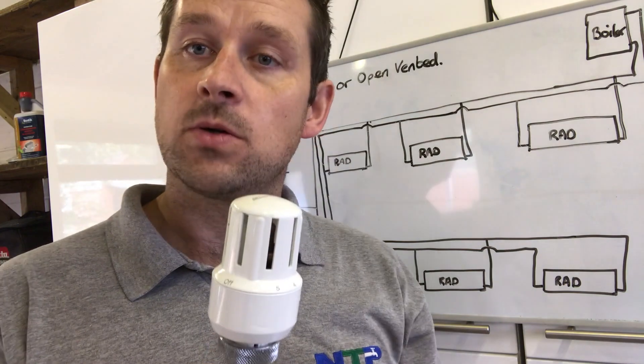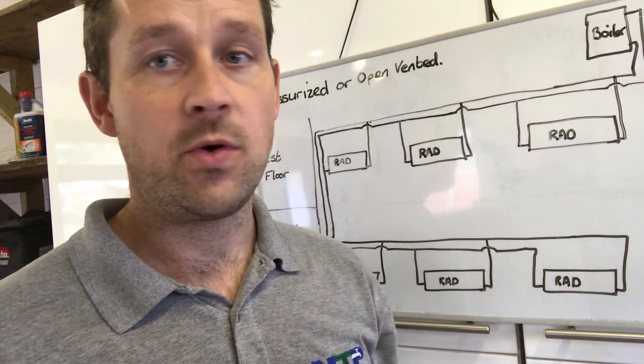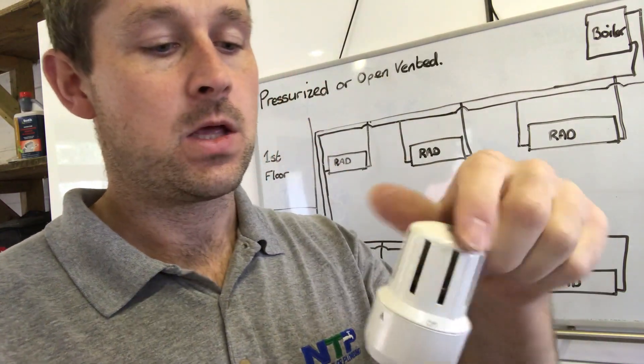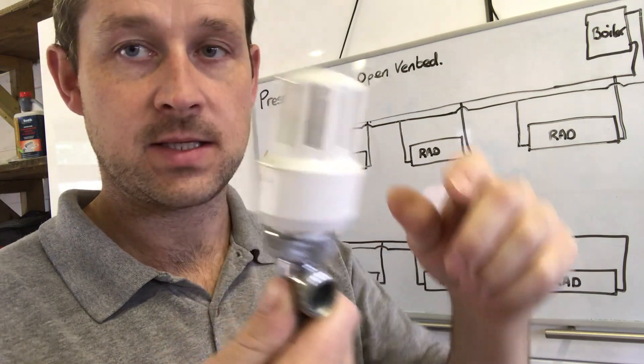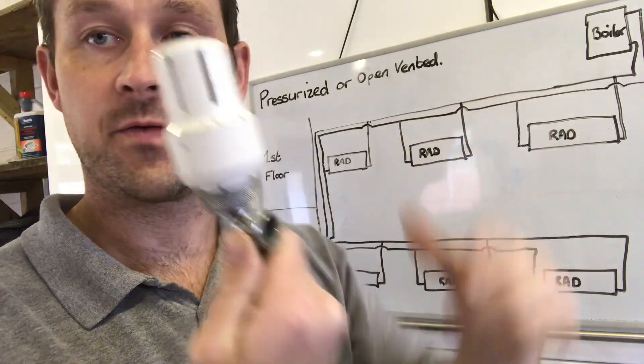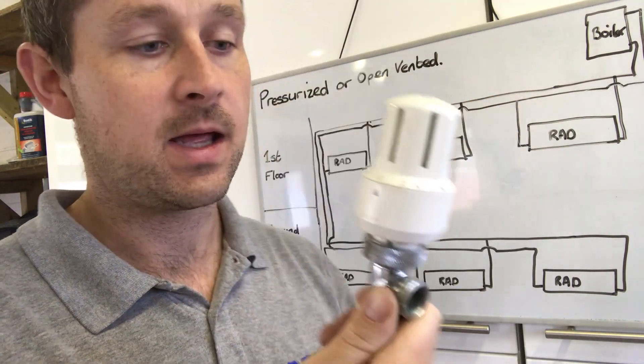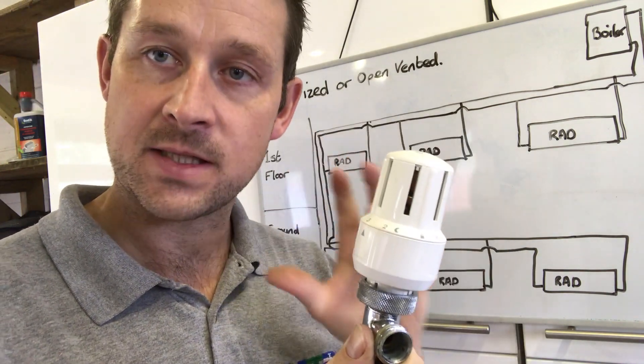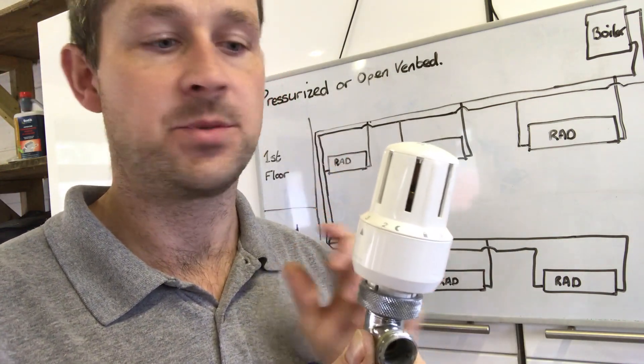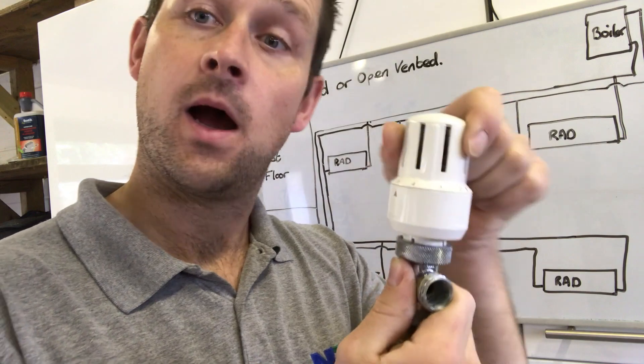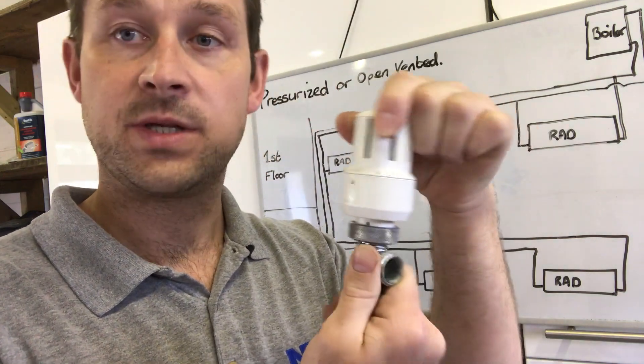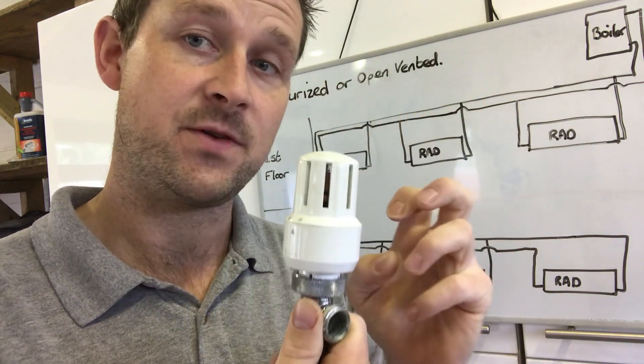When you do a new install, when you install a new central heating system or even just one radiator, you want to have this set to three, so halfway in between. So when you balance the system, the customer has the option of increasing slightly or reducing the heat if they want to for that individual radiator.